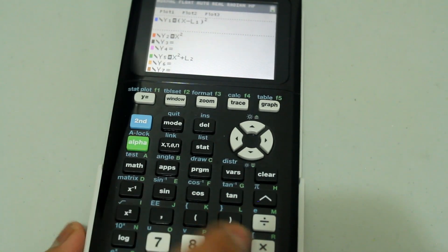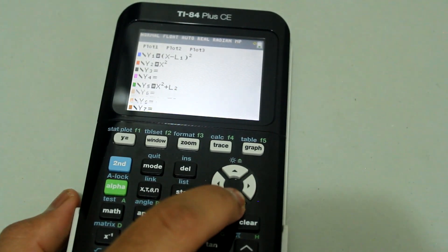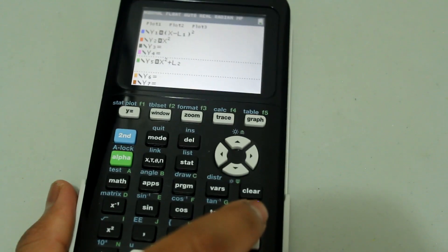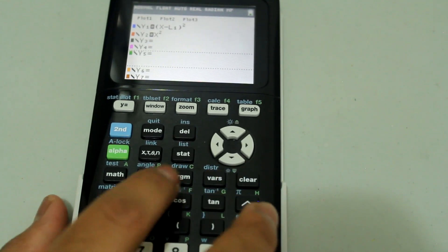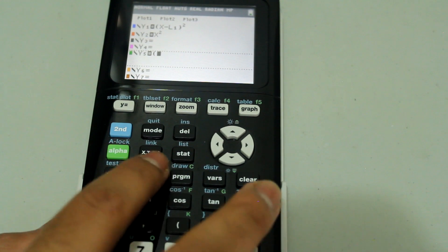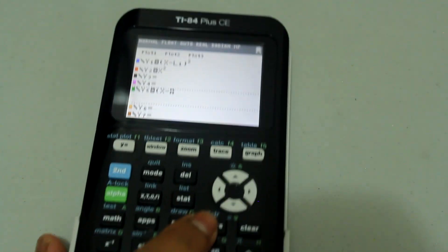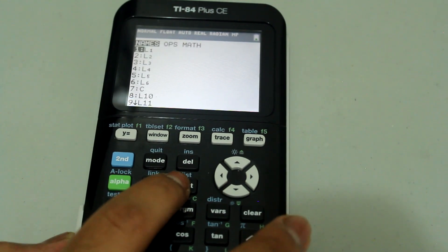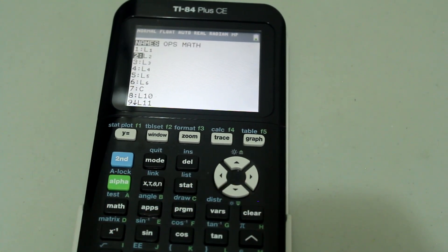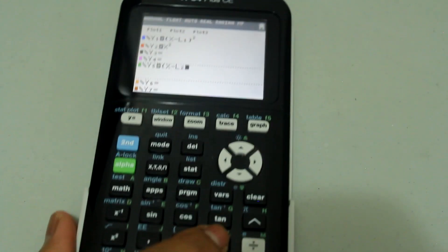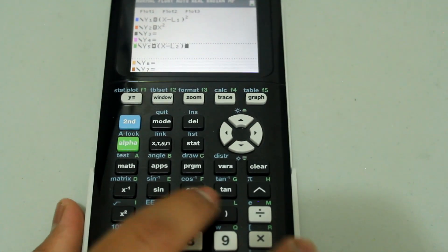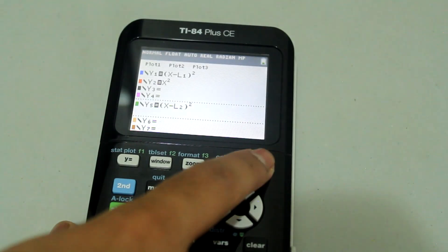Close the parenthesis, square it and you do the same thing for the bottom. Clear that, open a parenthesis, x minus second, stat, select L2, close the parenthesis, square it and now graph.